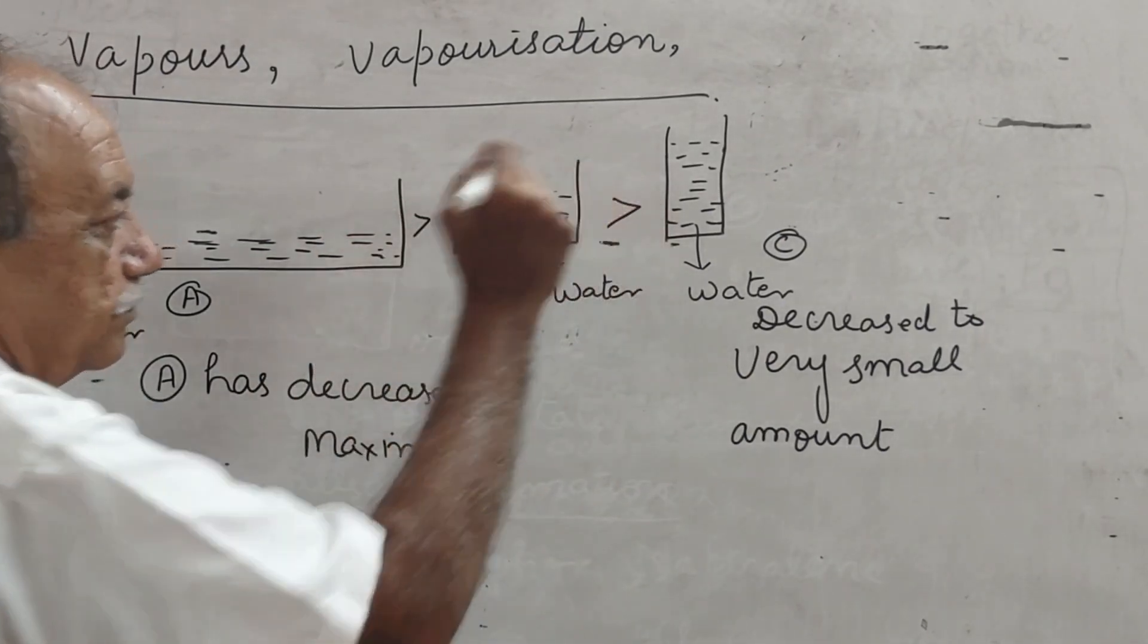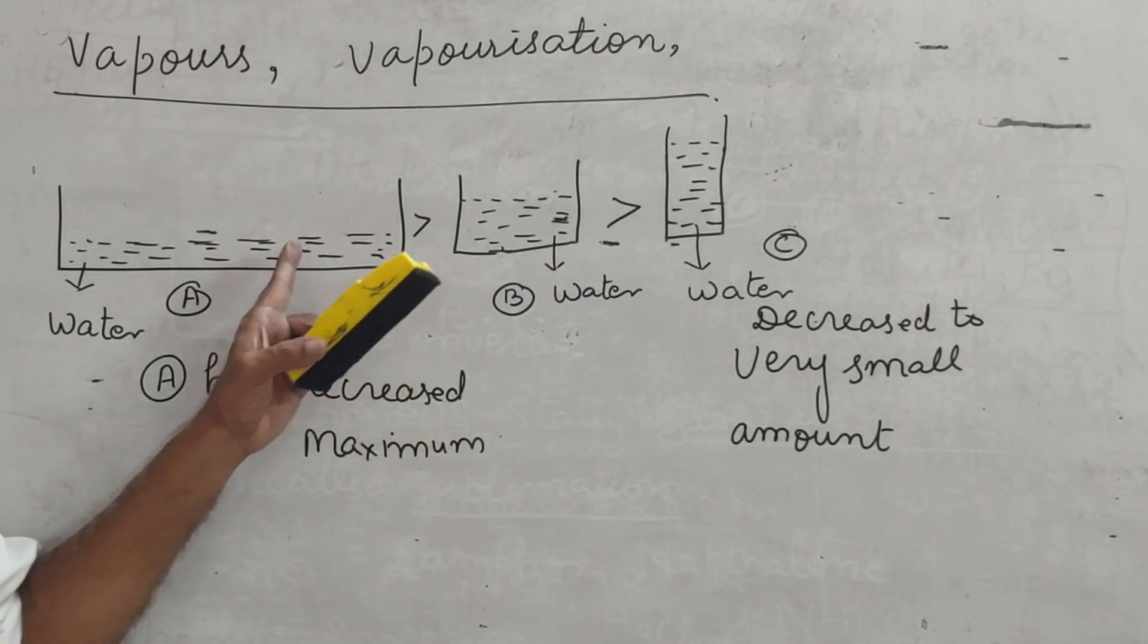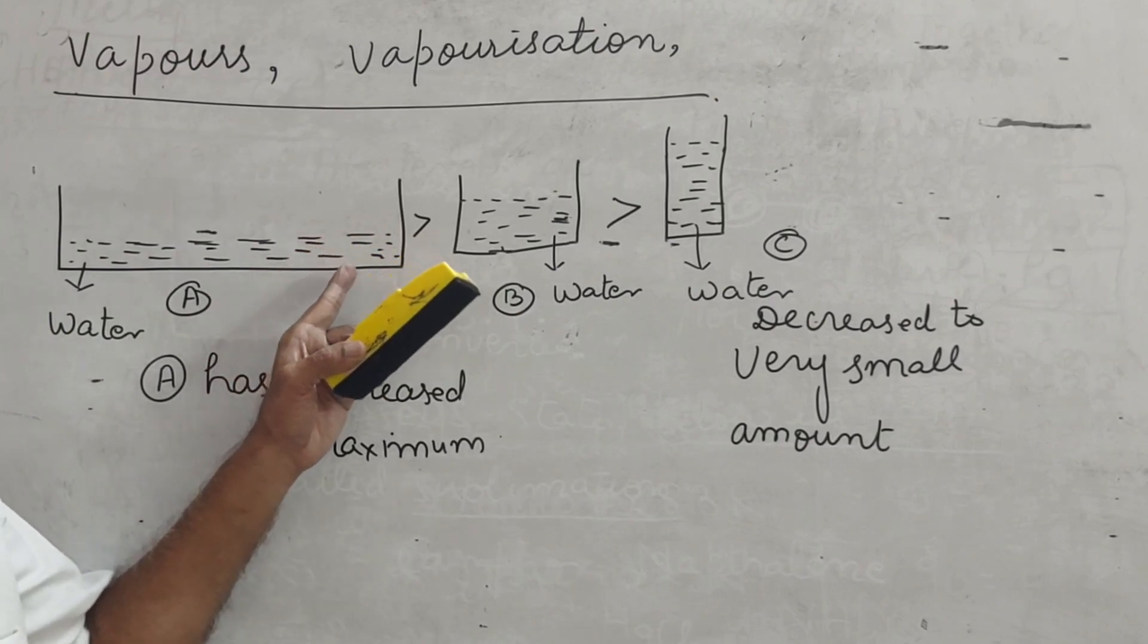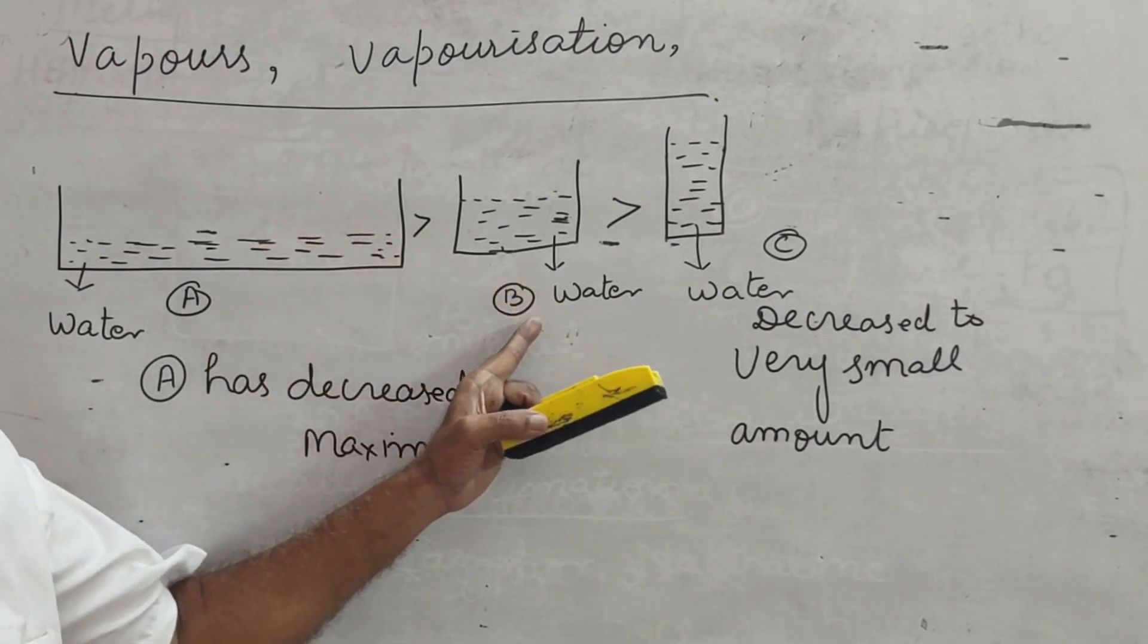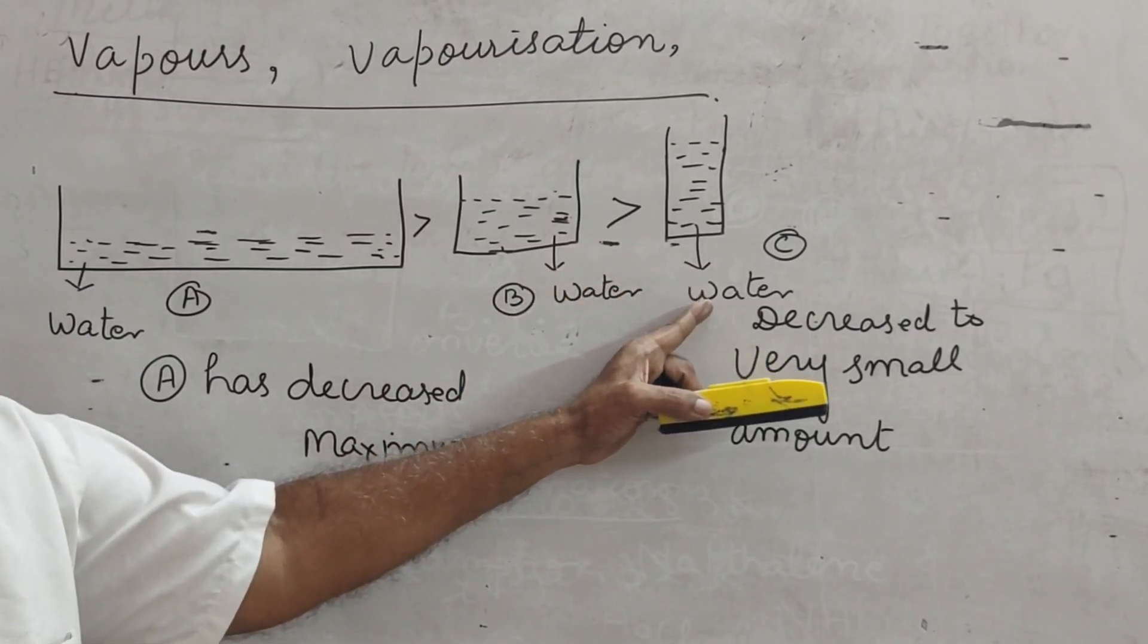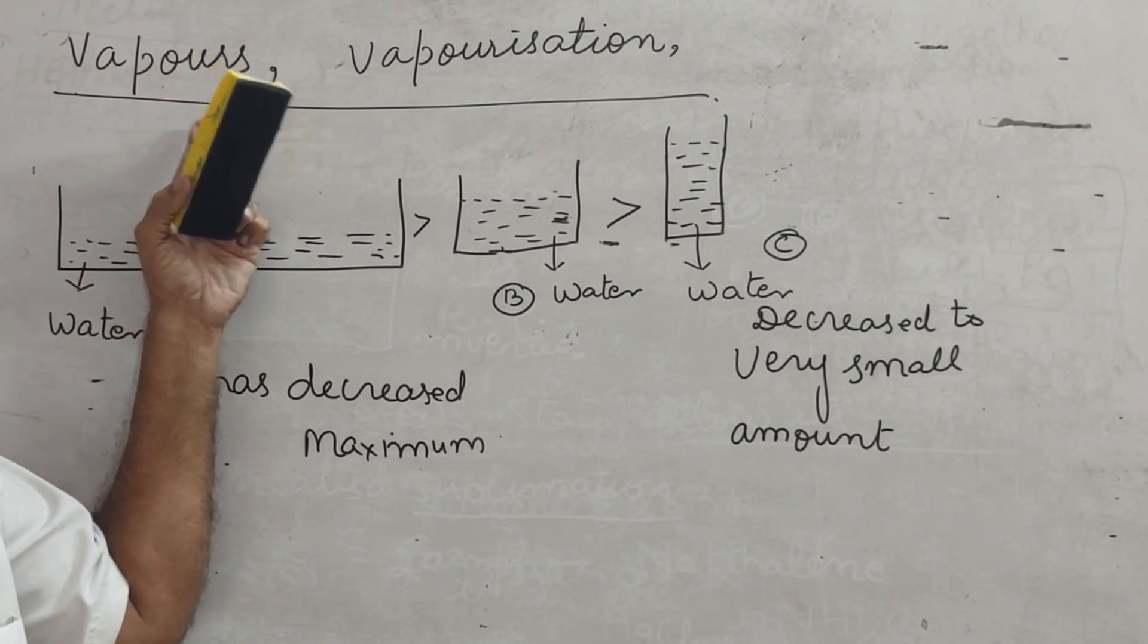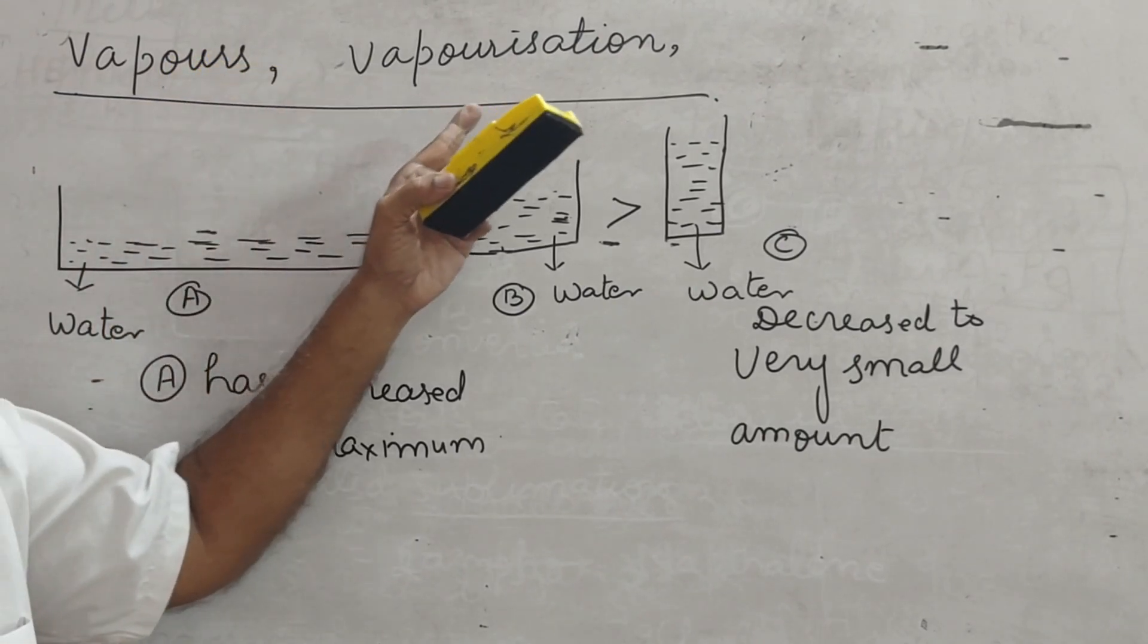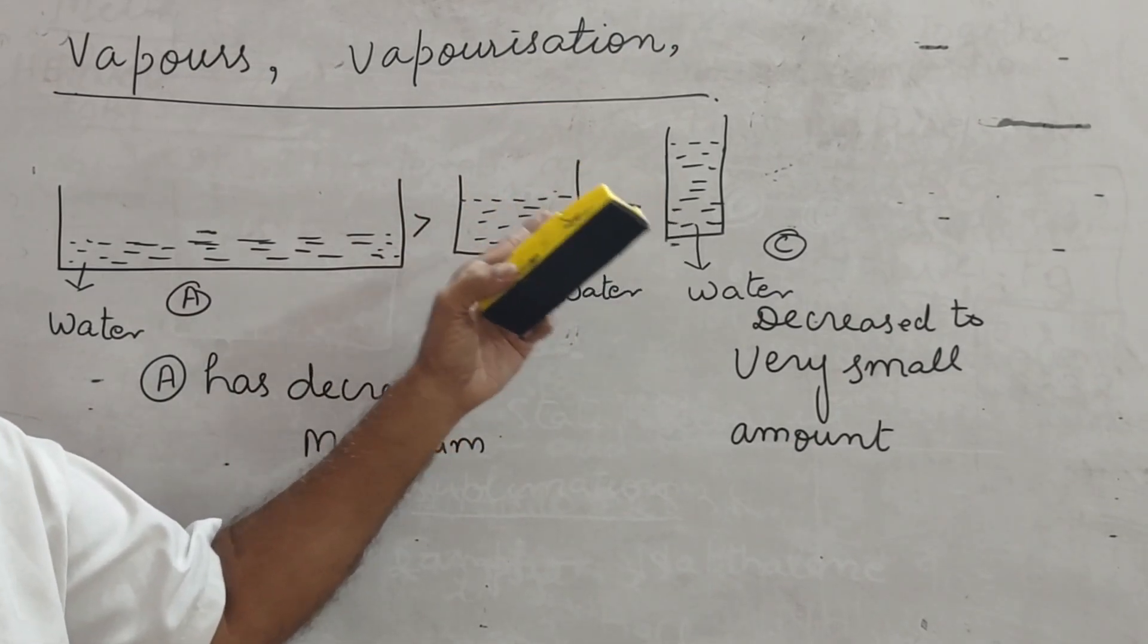That water which disappeared from container A, container B, container C, has been converted into vapors. And it is called vaporization.